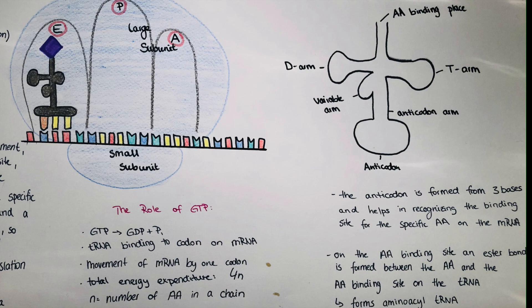On the amino acid binding site, an ester bond is formed between the amino acids and the amino acid binding site on the tRNA. So an aminoacyl tRNA is formed as long as the amino acid is connected to the tRNA and just the normal tRNA or transfer RNA is the non-amino acid carrying form.